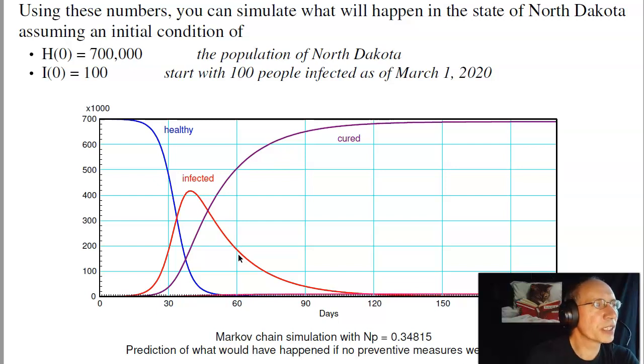This model also tells you part of the reason we had the emergency and the shutdown of the university as well as the rest of the country on spring break. If this model continued, we would hit over 400,000 infected people in the state of North Dakota in early April. The hospitals could not handle it. If the hospitals get overwhelmed, then the death rate will shoot up.